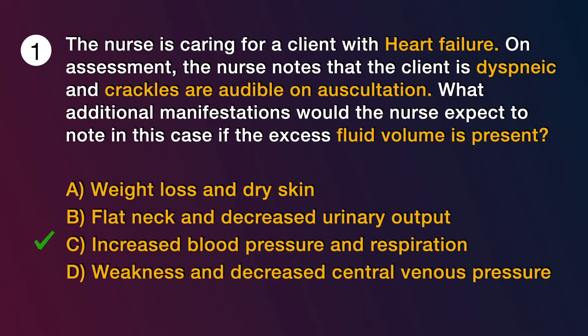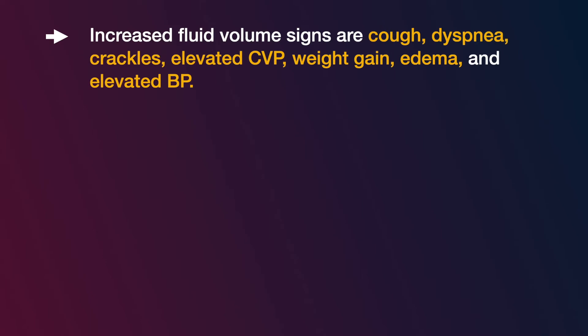The answer is C, increased blood pressure and respiration. Increased fluid volume signs include cough, dyspnea, crackles, elevated CVP, weight gain, edema, and elevated BP. Fluid volume excess is also known as over-hydration and fluid overload. It occurs when fluid intake or fluid retention exceeds the body's needs.